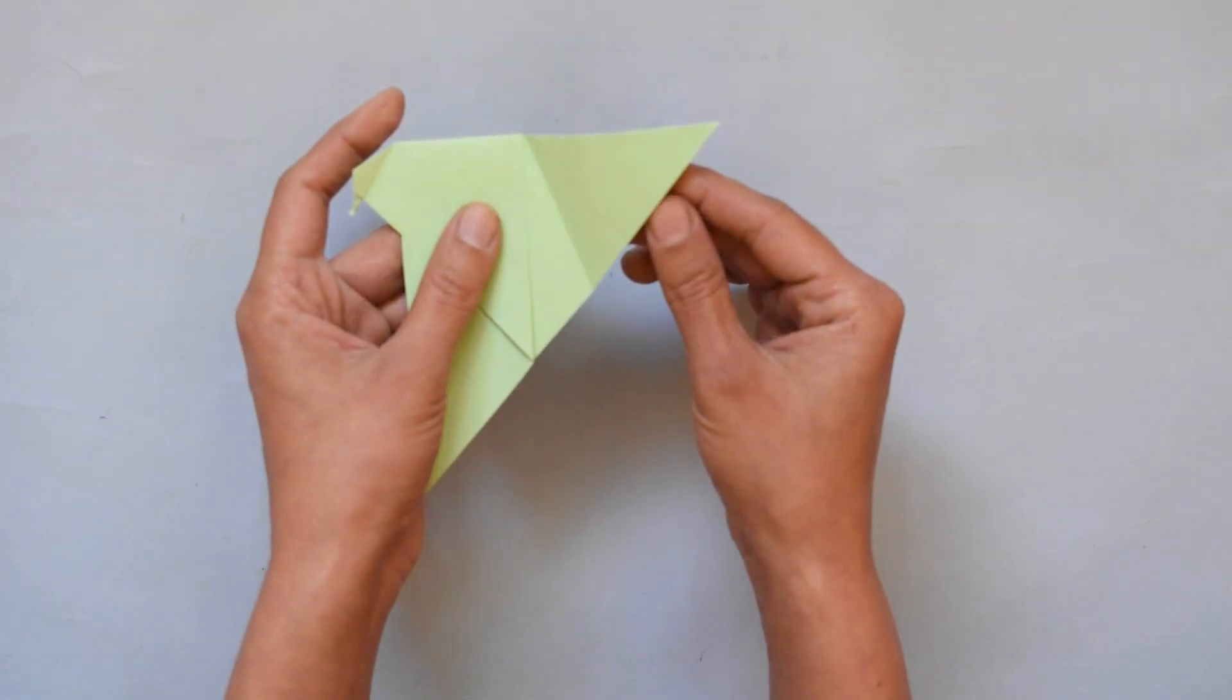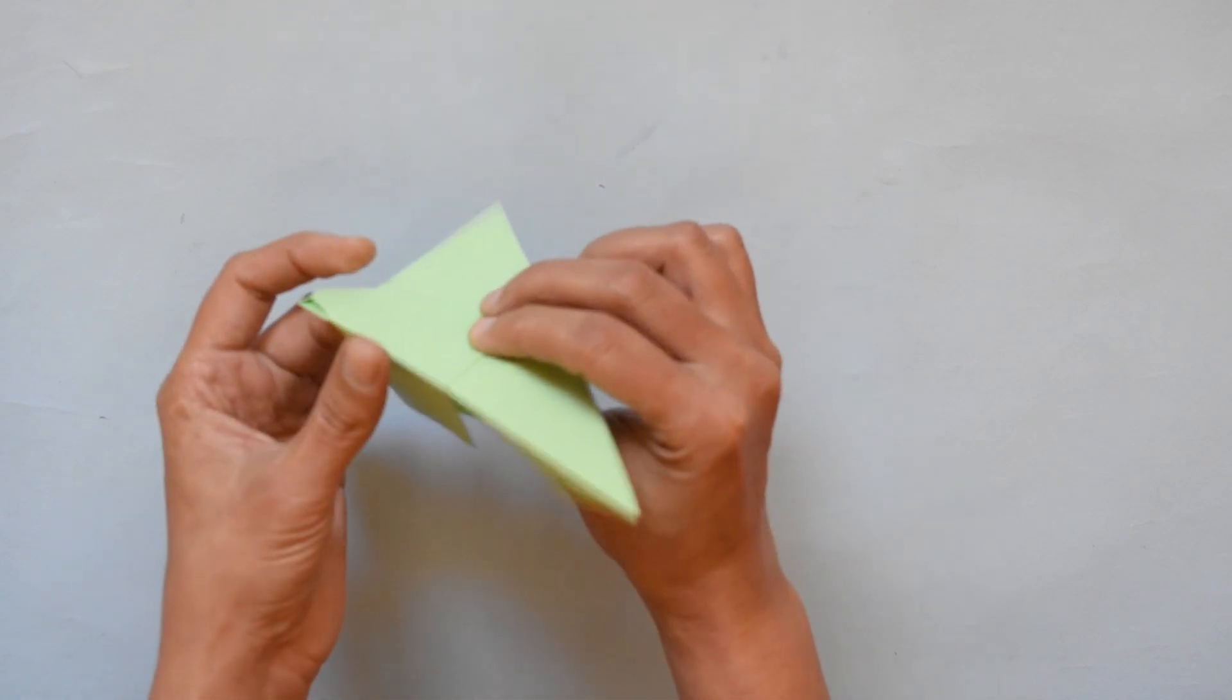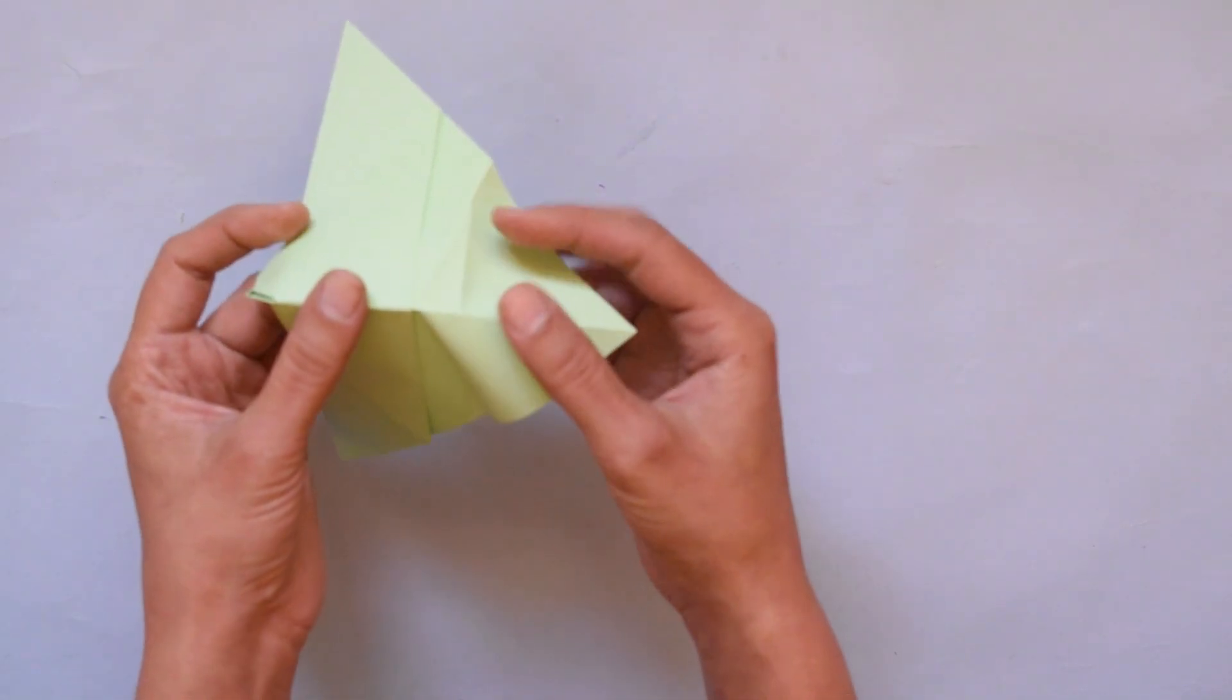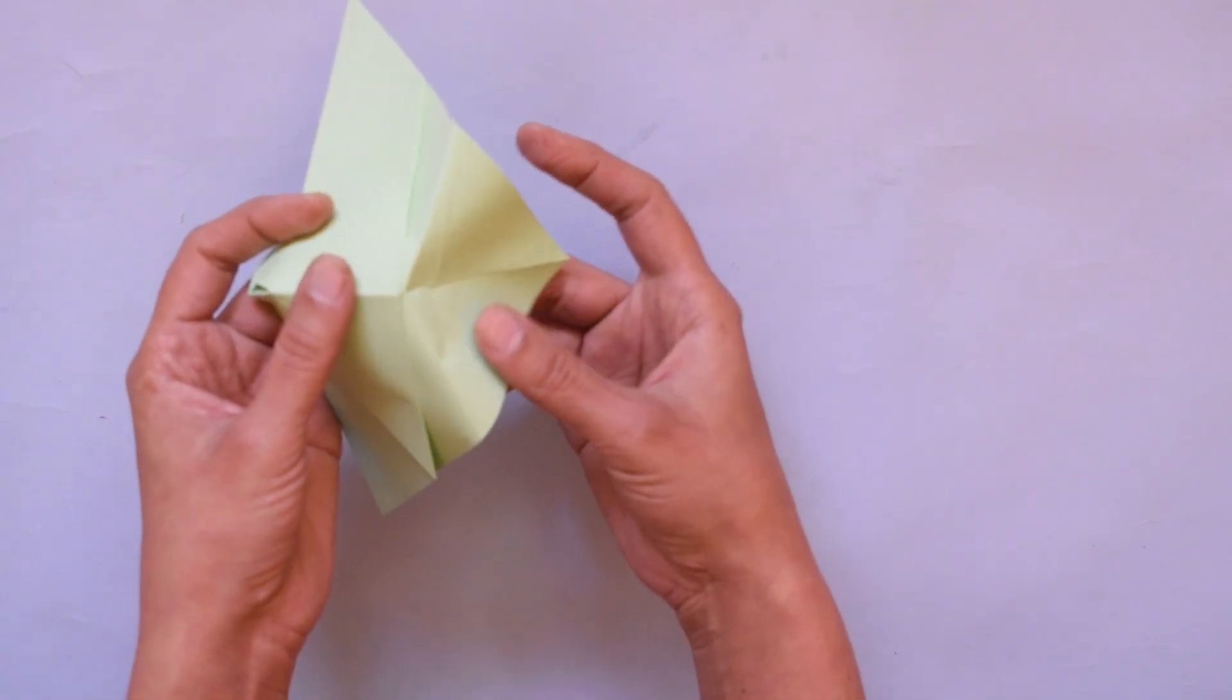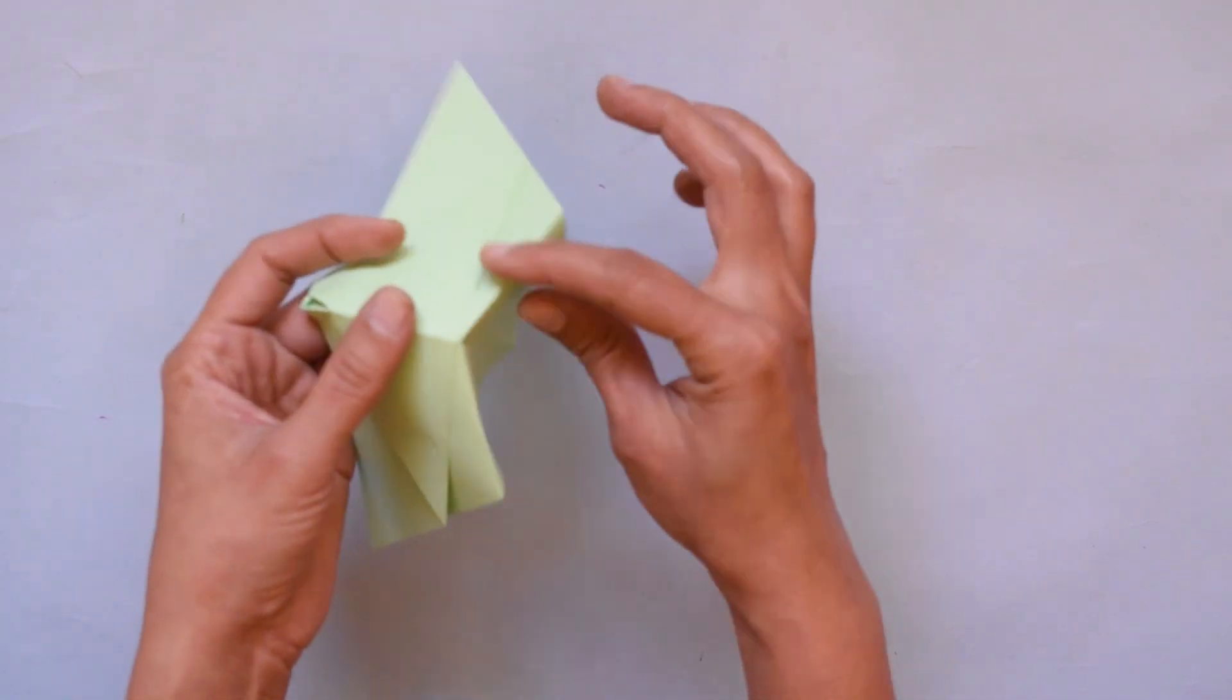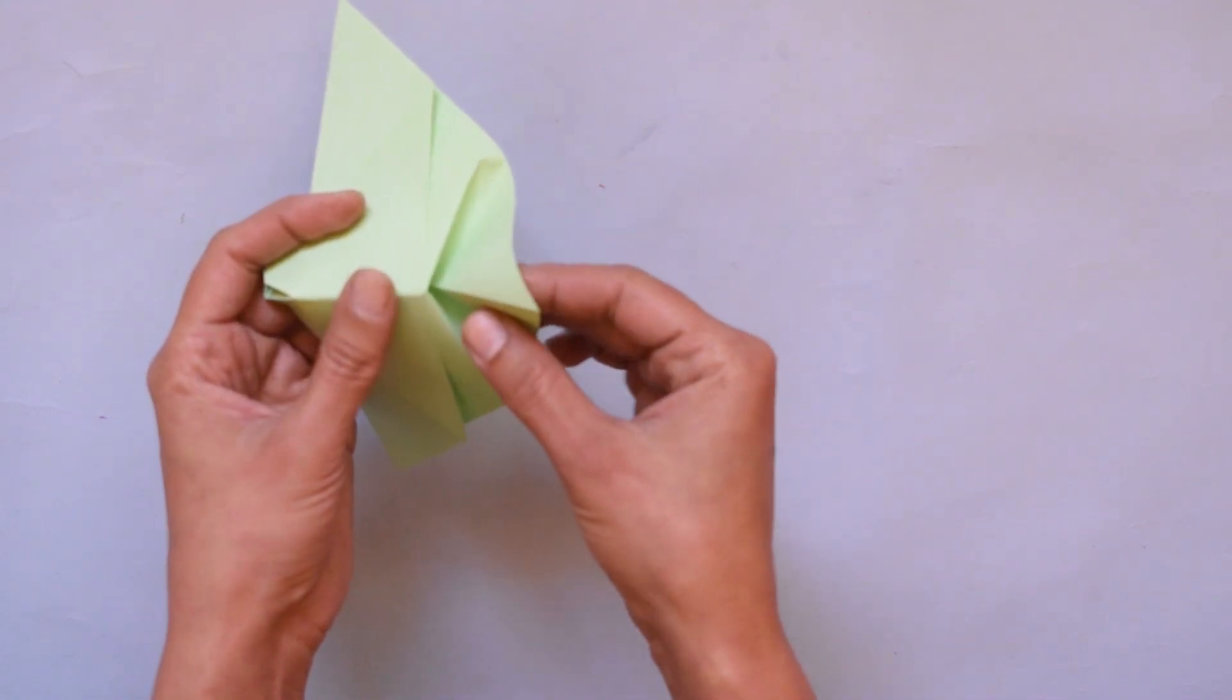Now open this packet. Now fold it in the middle and press it inside. And you will get this shape.